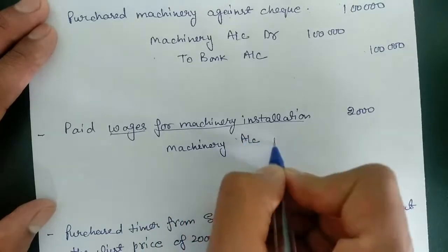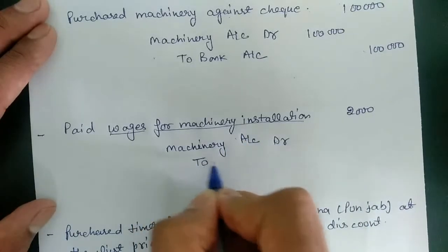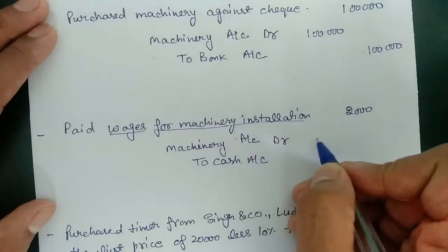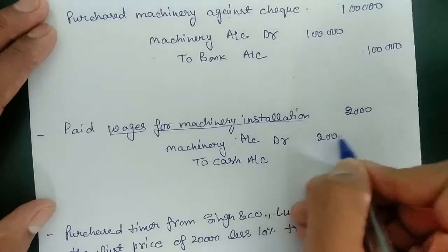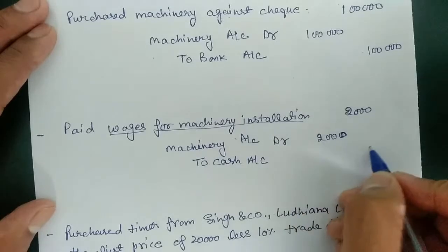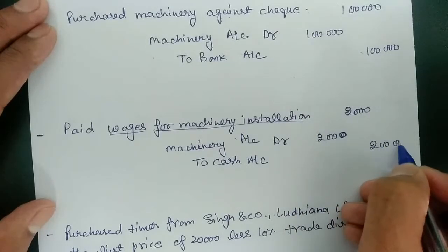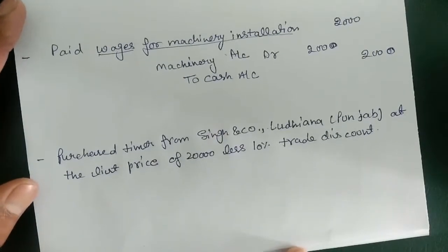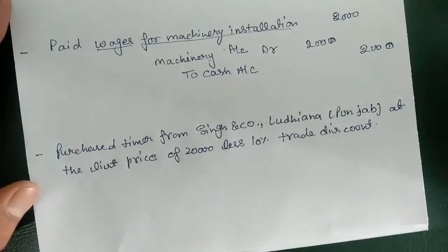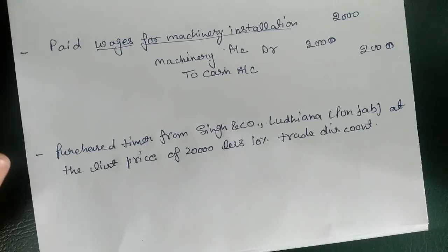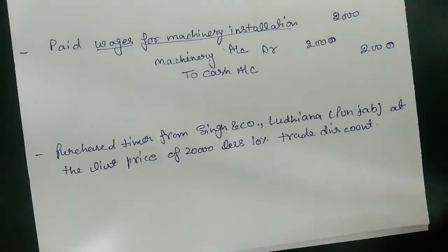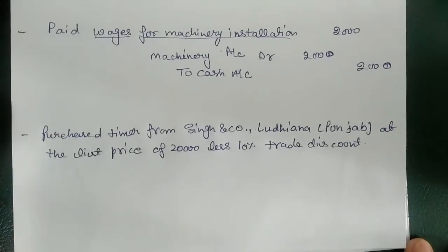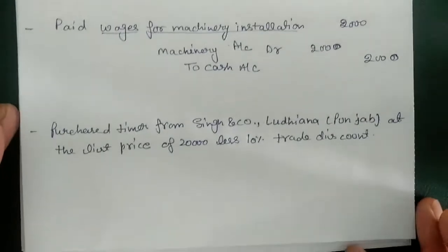The next entry is paid wages for machinery installation. Normally wages account is debited, but here we are paying wages for machinery installation, so it adds to the cost of the machinery. Instead of debiting wages account, we debit machinery account — machinery account debit to cash account, amount 2,000.